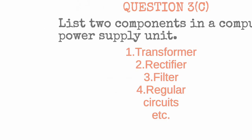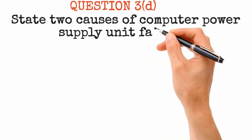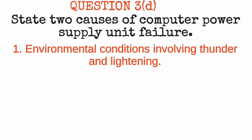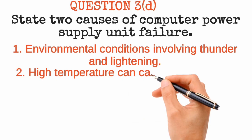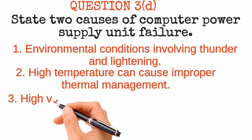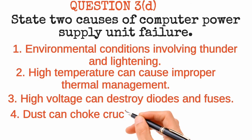Question 3d: state two causes of computer power supply unit failure. First, environmental conditions — lightning can strike nearby and, since lightning contains high voltage, it causes a power surge that home appliances and computers cannot withstand, leading to PSU failure. Second, improper thermal management — the machine and its components generate heat, and if heat is not properly managed, high temperatures can cause PSU failure. Third, high voltage can destroy diodes and fuses.